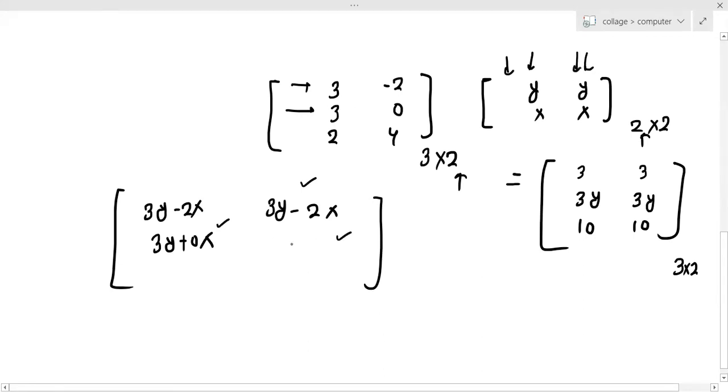Second row and first column corresponding is second row and second column. Again, 3y minus 2x will come. Then, again, 2y plus 4x will come. Now, you will compare. Then, once again we have 1 equation for this row and then we will have 1 equation for this row.